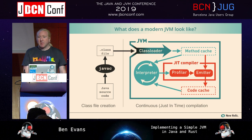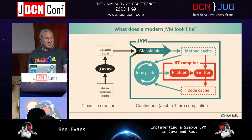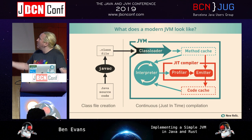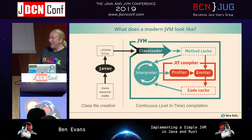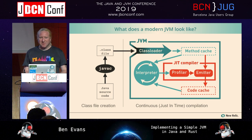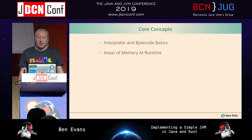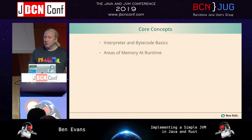Here's what a JVM looks like if we're going to build one. The three main subsystems are: a class loader, an interpreter, and garbage collection — which is really a runtime data structure. I'm genuinely not going to build a JIT compiler, because that's going to take too long. The parts we're fundamentally going to build are the interpreter and the class loader.